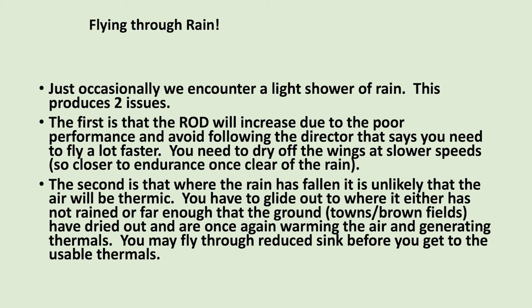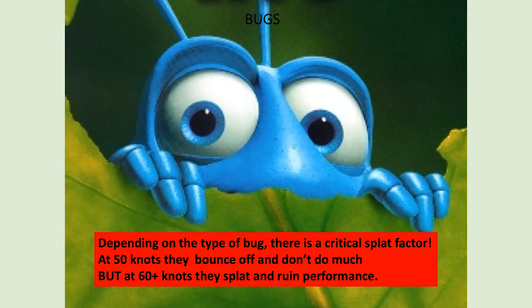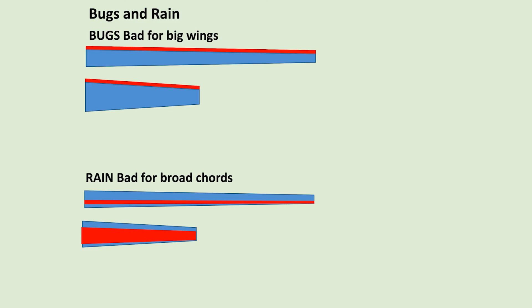You may fly through reduced sink before you get to usable thermals. Bugs. Depending on the type of bug, there is a critical splat factor. At 50 knots they bounce off and don't do much, but at over 60 knots they splat and ruin performance. Bugs are bad for big wings because they have such a long leading edge. Rain is bad for broad wings because of the large surface area behind the separation point where water doesn't run off quickly.